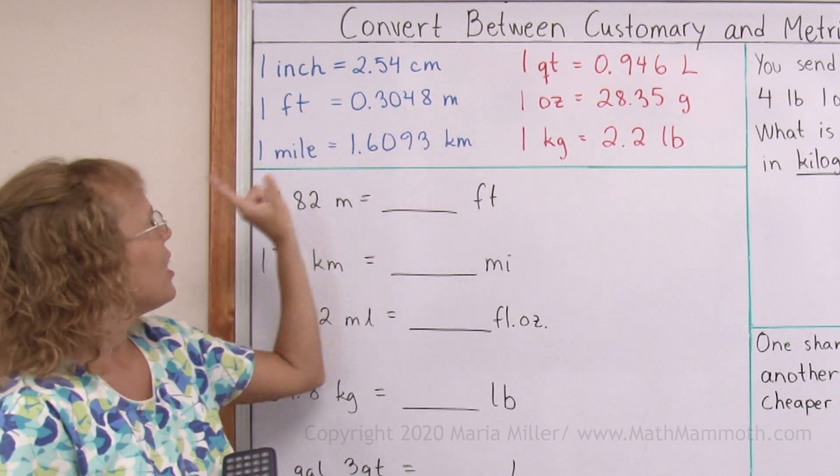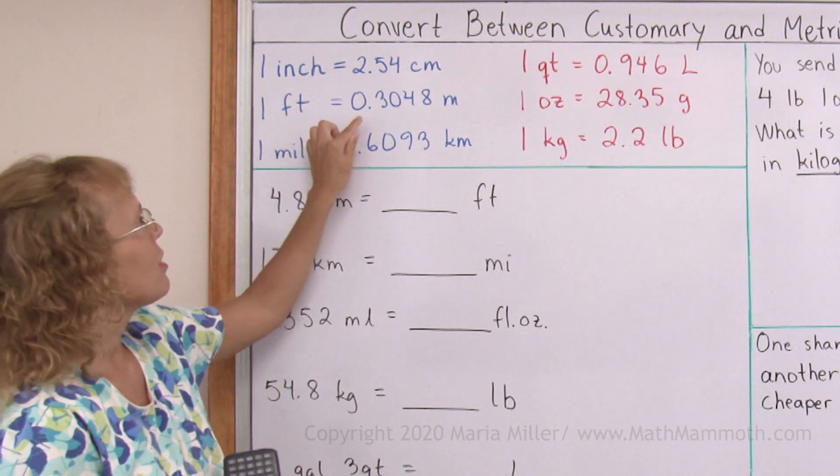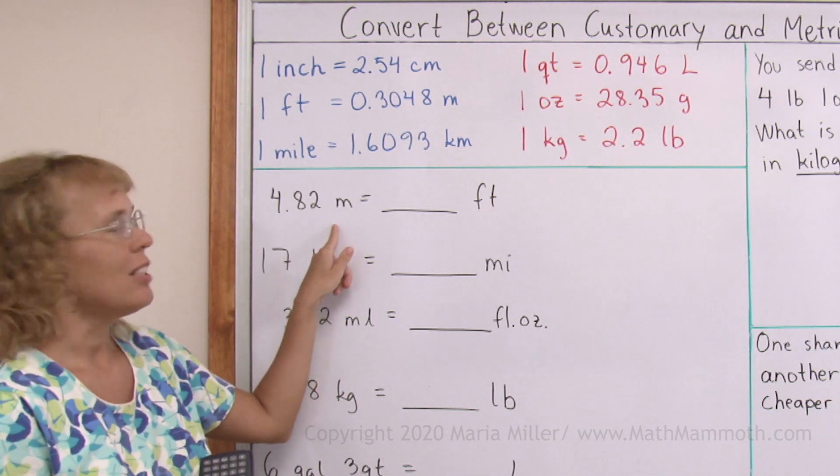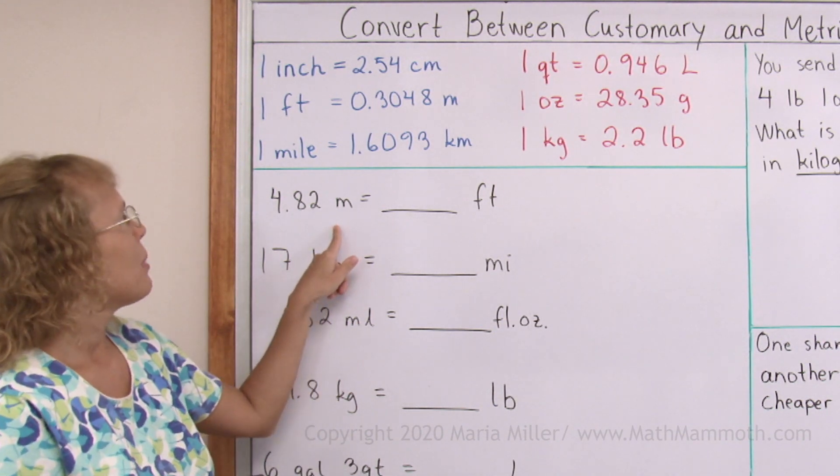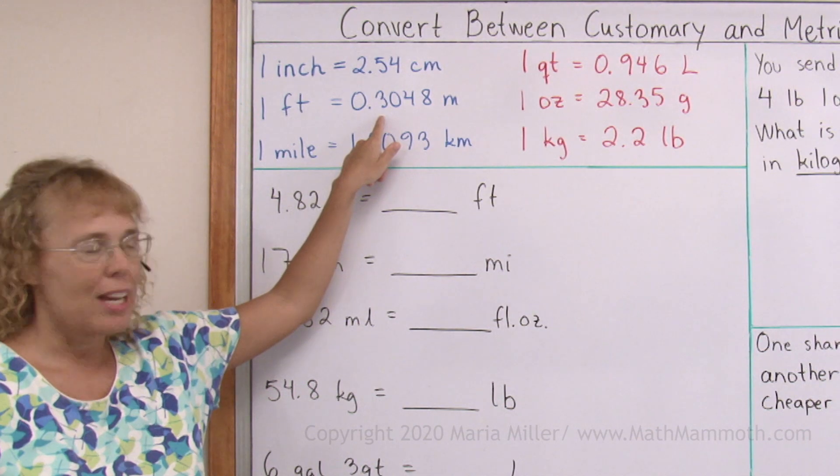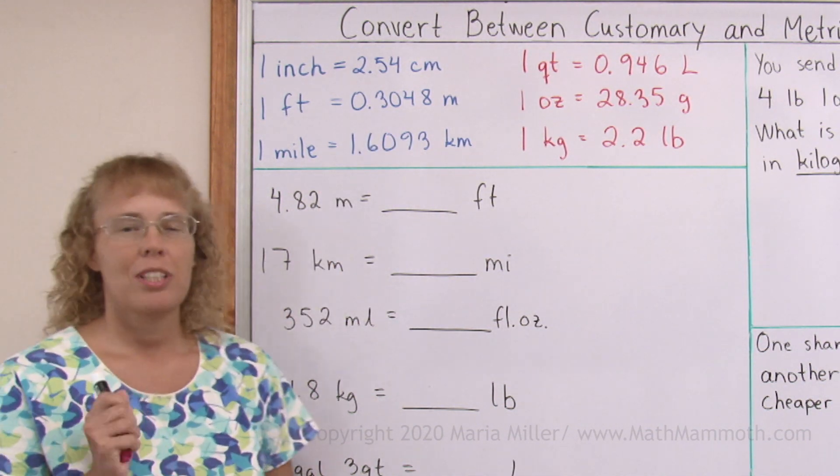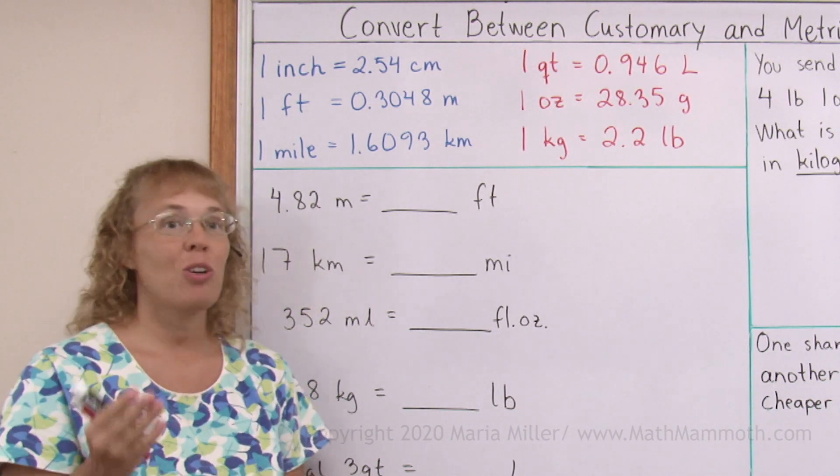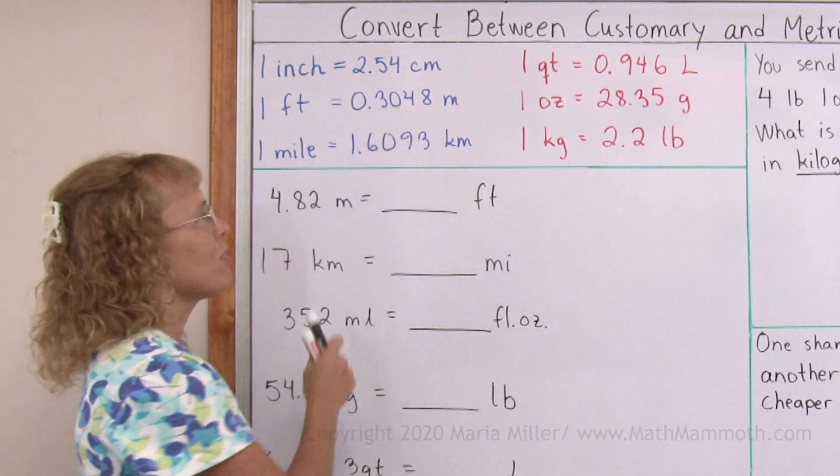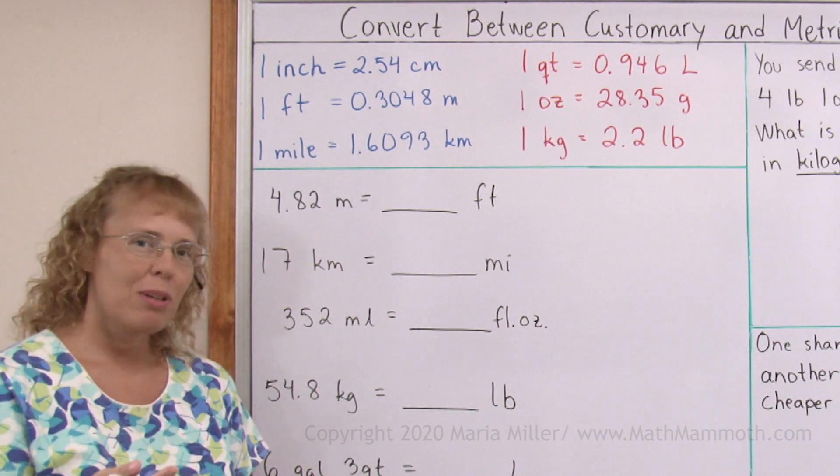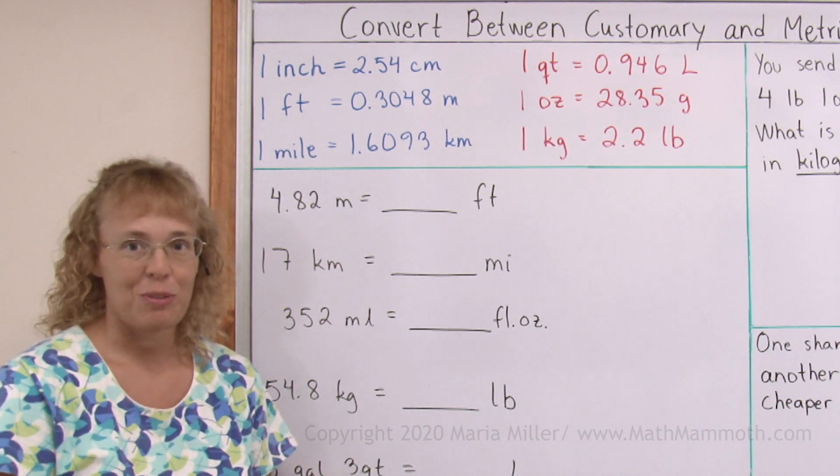If this had been one meter equals so many feet, because I have here so many meters, then I could have just multiplied. But now it turns out I need to divide by the conversion factor. And I want you to think now. In each of these problems, we will either multiply or divide by the conversion factor. But which? How do you know whether to multiply or divide?